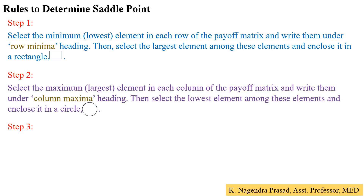Step 2: select the maximum element in each column of the payoff matrix and write them under the column maxima heading. Then select the lowest element among these elements and enclose it in a circle. So first write the column maxima heading, select the maximum elements in each column, and then select the lowest element among them.